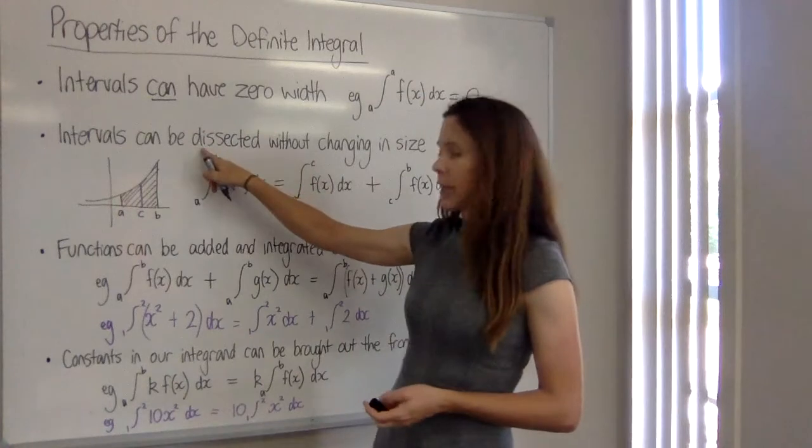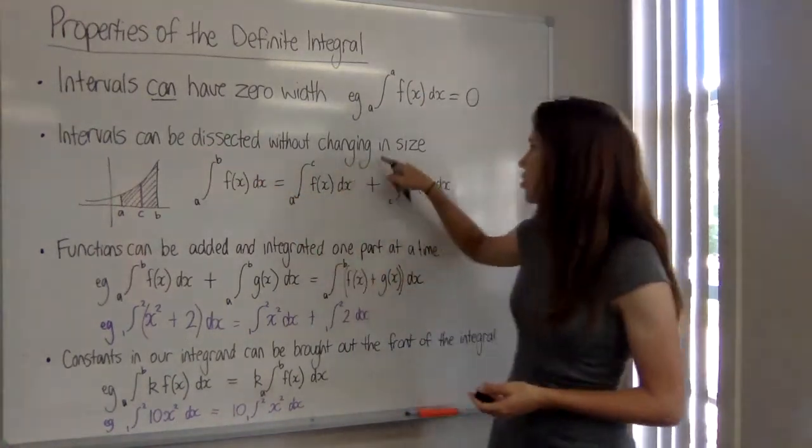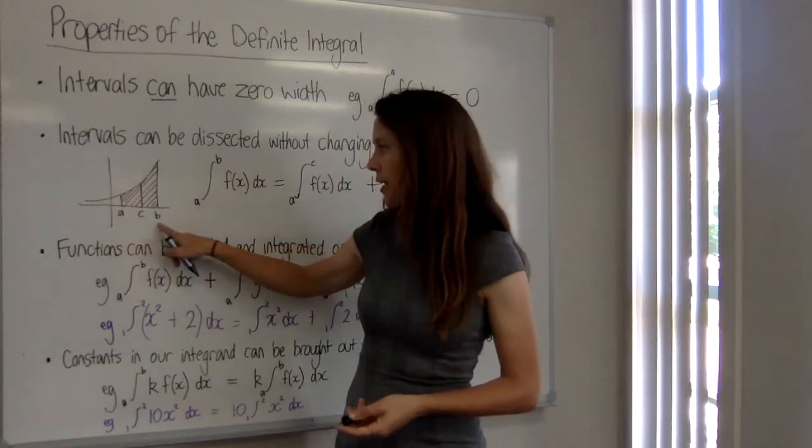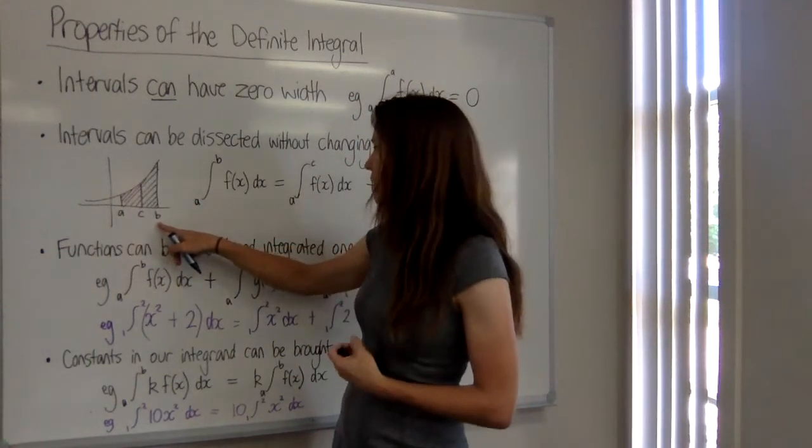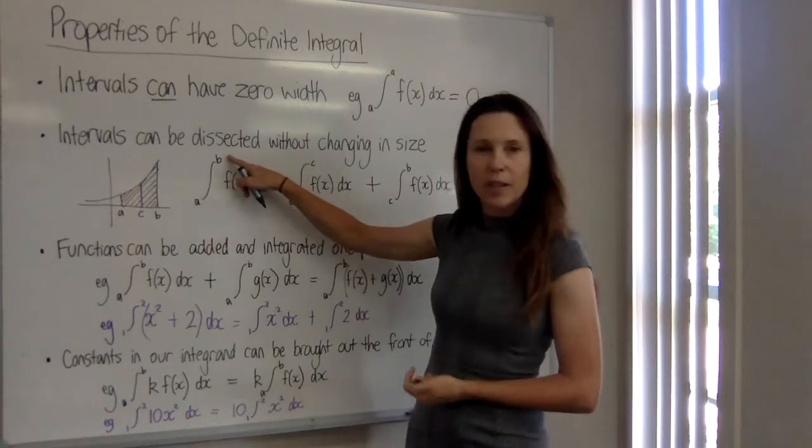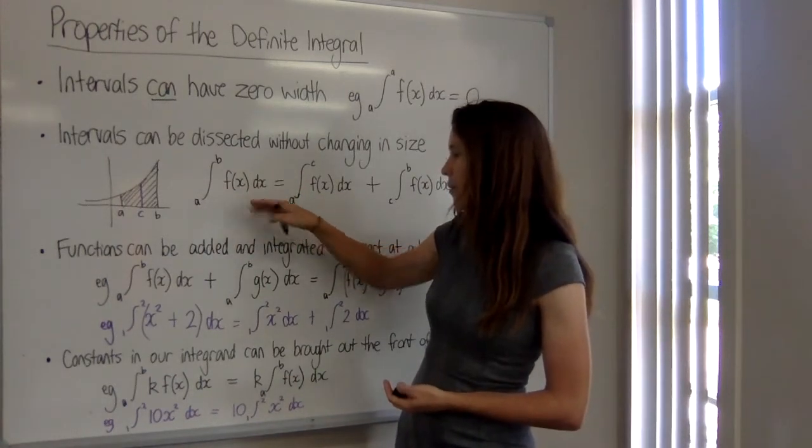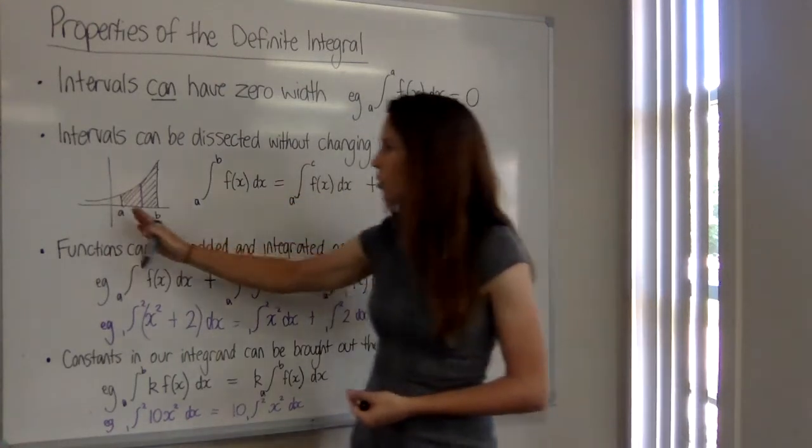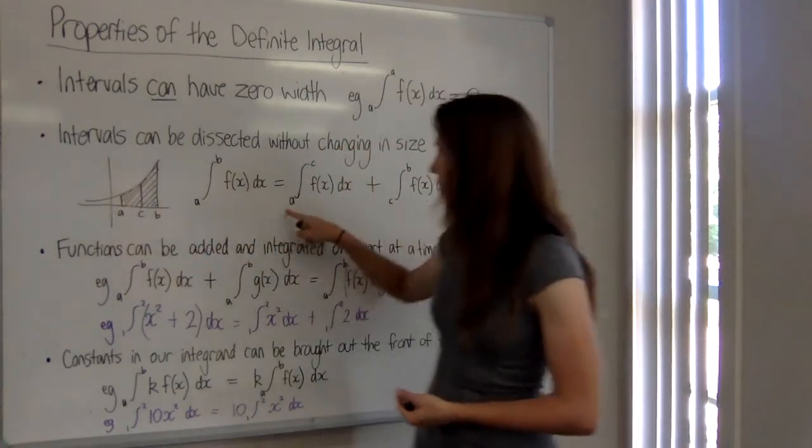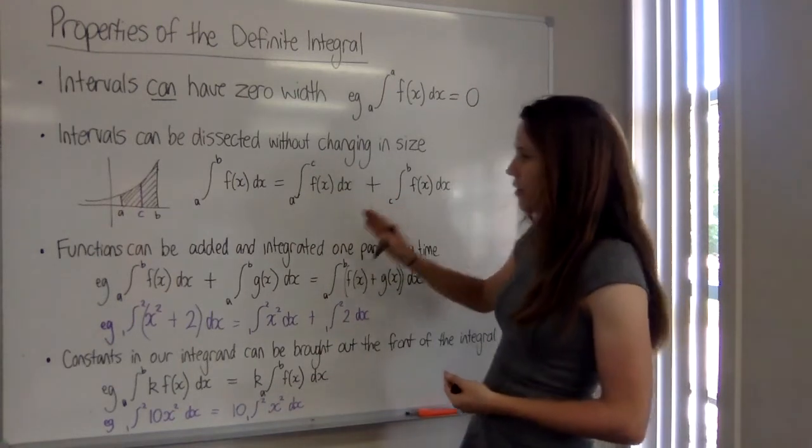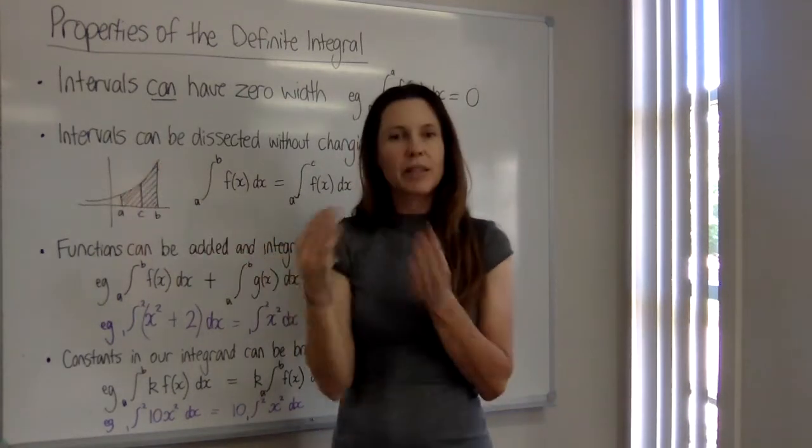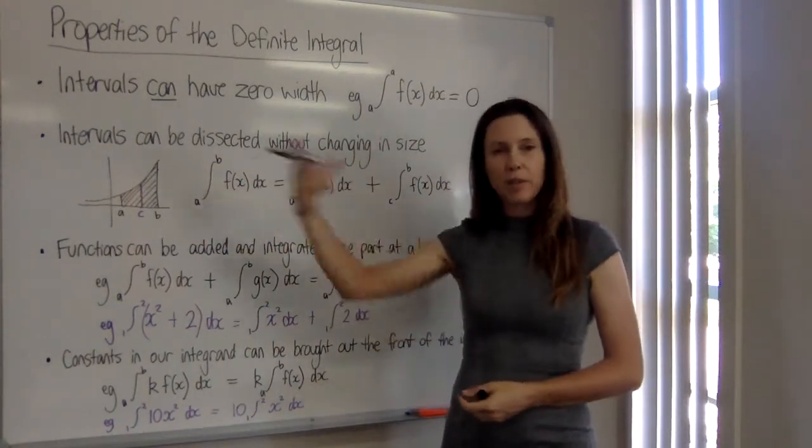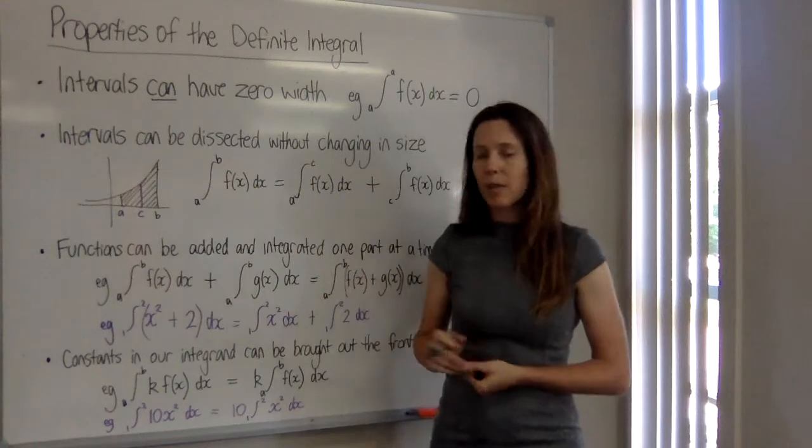We can also cut up our intervals or dissect them without changing the size. So for example, here we've got a shaded area between x equals a and x equals b. It makes sense then that if we use a and b as the upper and lower bounds of f of x dx, that's exactly the same as if we'd split it up into the area from a to c plus the area from c to b. So sometimes you'll see them split up and you'll want to merge them together, other times you might see them together and you want to split it for some reason.